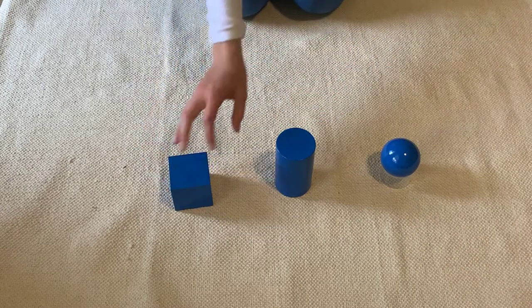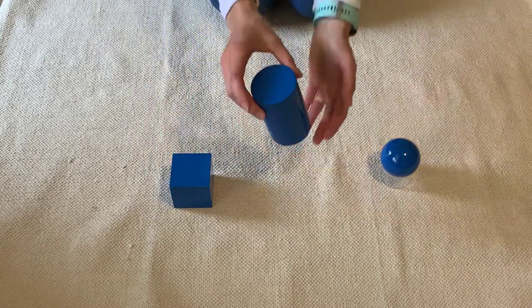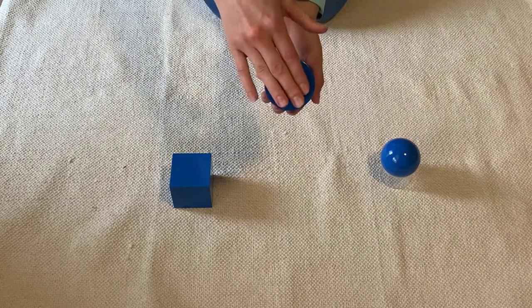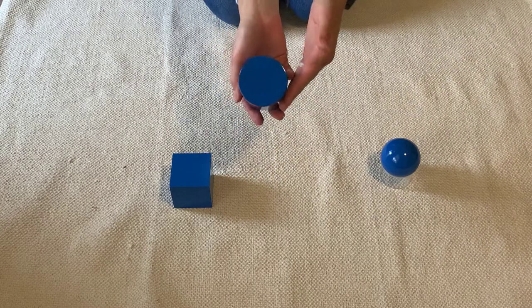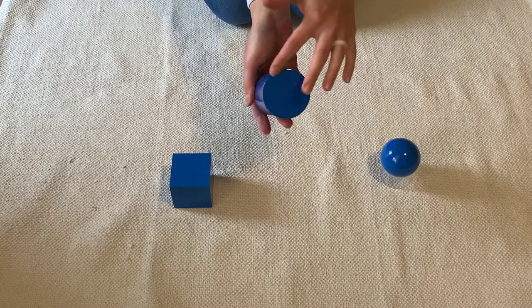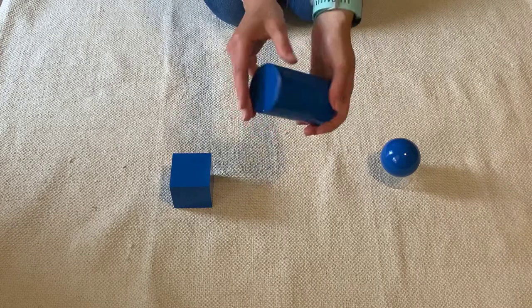Now let's look at the cylinder. A cylinder has two bases and the bases are circles. One, two.